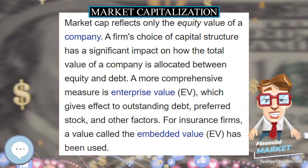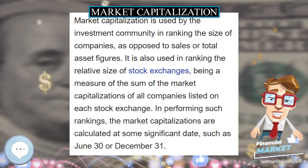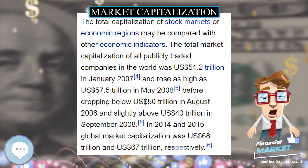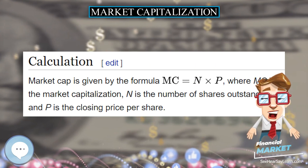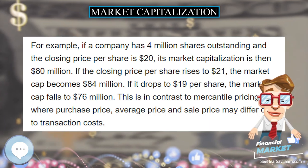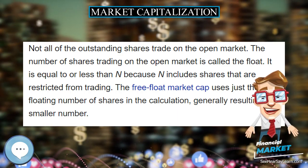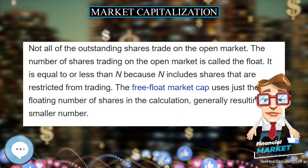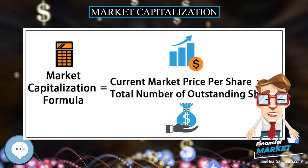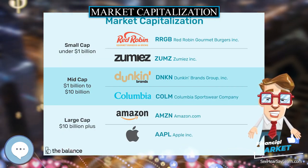If the closing price per share rises to $21, the market cap becomes $84 million. If it drops to $19 per share, the market cap falls to $76 million. This is in contrast to mercantile pricing where purchase price, average price, and sale price may differ due to transaction costs. Not all of the outstanding shares trade on the open market — the number of shares trading on the open market is called the float. It is equal to or less than N because N includes shares that are restricted from trading. The free float market cap uses just the floating number of shares in the calculation, generally resulting in a smaller number.